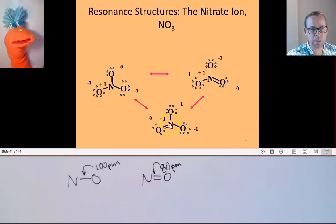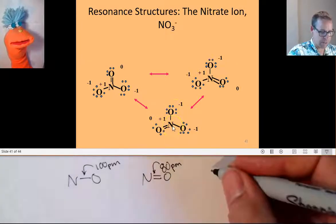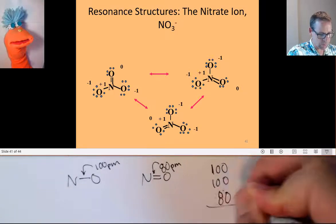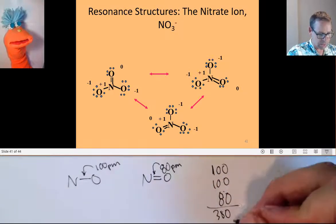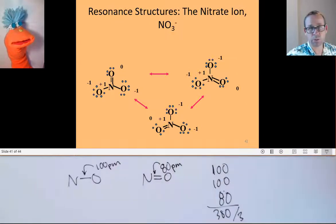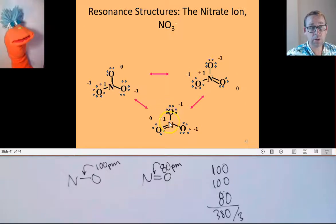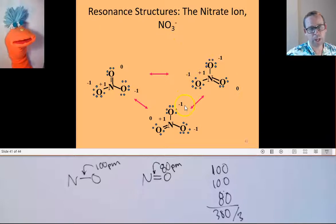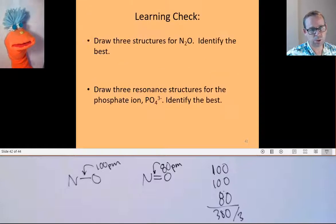And the answer would be, this one would be 80, these two would be 100, but on average that would make two 100s and 180, so 380, and then I would have to divide that 380 by 3, and that would be the average bond length of the nitrogen-oxygen bond in the nitrate polyatomic ion. So again, evidence of resonance structure.